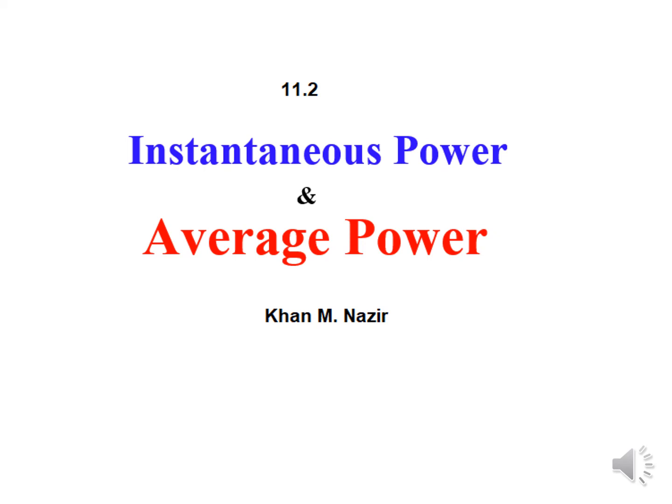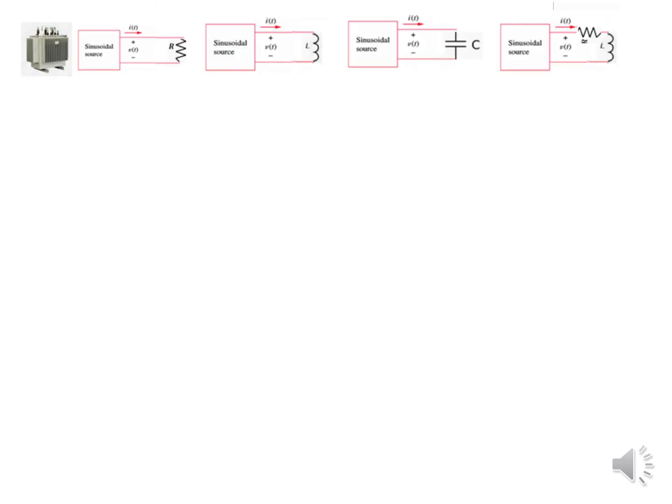In this video we learn about instantaneous power and average power. Let's consider a scenario where a sinusoidal source is connected to a pure resistive load, pure inductive load, pure capacitive load, or a combination such as RL, RC, or LC.